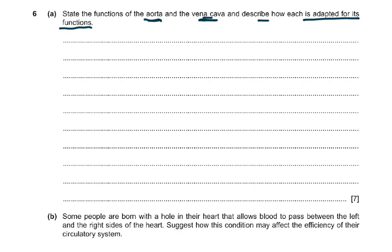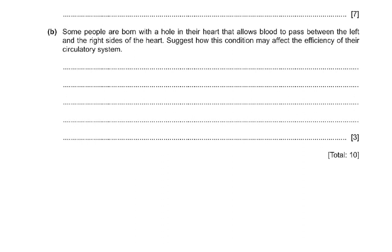The next part asks: some people are born with a hole in their heart allowing blood to pass between the left and right sides. How does this affect the efficiency of the circulatory system? There will be mixing of oxygenated and deoxygenated blood — more oxygen in blood sent to the lungs and less oxygen in blood sent to the body. This reduces aerobic respiration, so less energy is released. More anaerobic respiration occurs, producing more lactic acid. The heart beats faster because cells receiving less oxygen send signals to the brain, which instructs the heart to beat faster to meet oxygen demand.